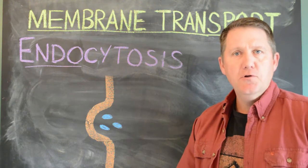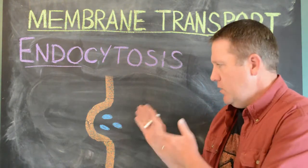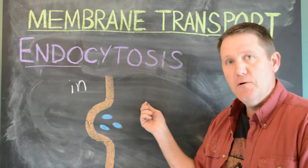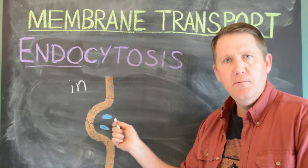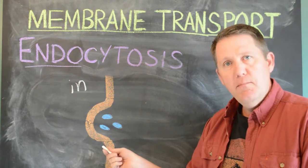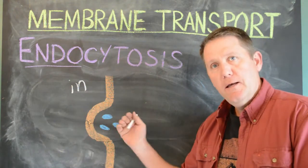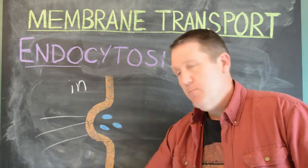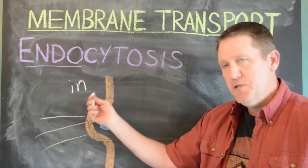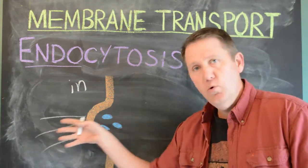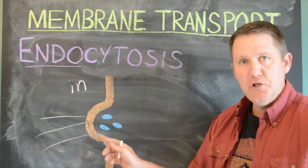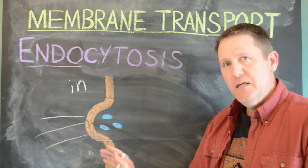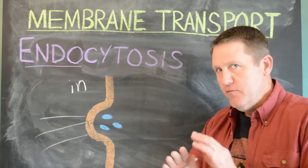There are three versions of endocytosis, but the fundamentals are the same for all of them. Inside the cell, outside the cell — we're bringing large objects in. First, we deform the membrane. It's a fluid membrane, so it can move and divot inward. Proteins associated with the membrane and the cytoskeleton pull on the membrane, taking energy to cause a change in shape.